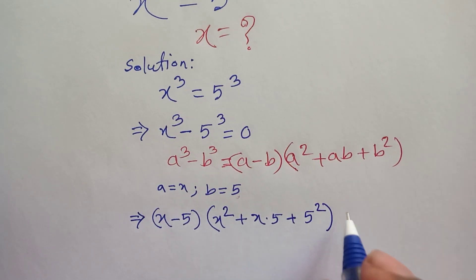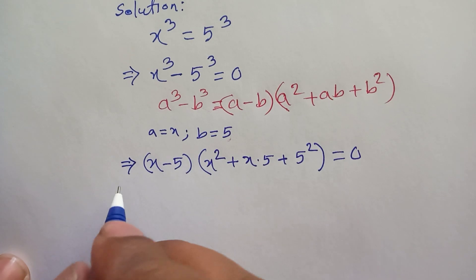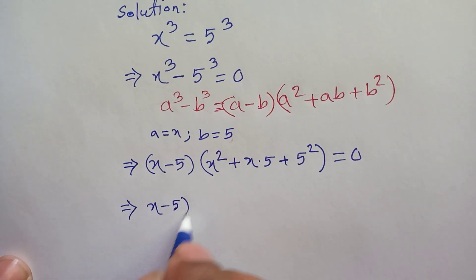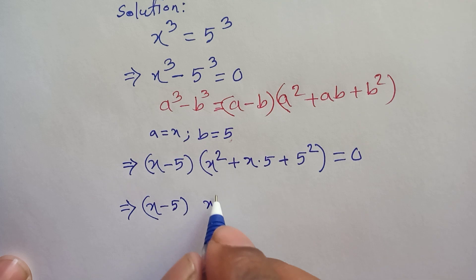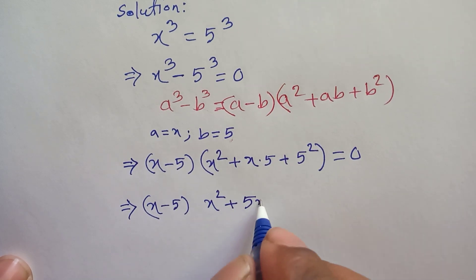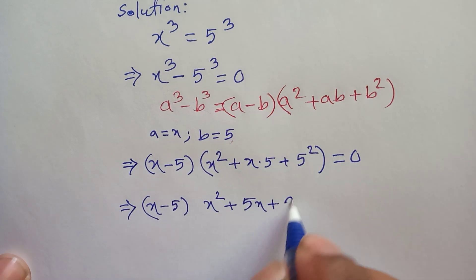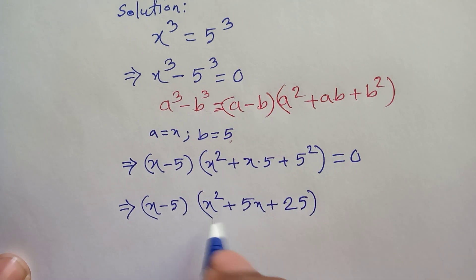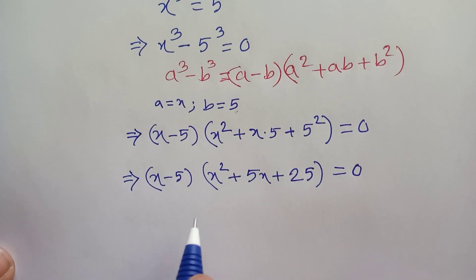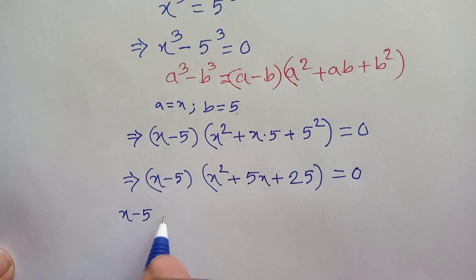...plus 5 squared) is equal to 0. So we have (x minus 5) times (x squared plus 5x plus 25) is equal to 0. By the zero product property, we can write x minus 5 equals 0, or...